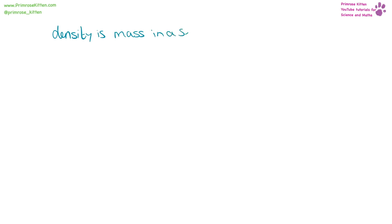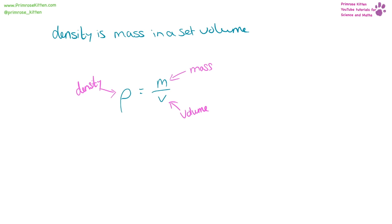Density is the amount of mass in a set volume. The equation for this is rho (ρ) — it looks like a lower case p but it's not, it's a lower case rho — equals mass over volume. The units: mass is measured in kilograms, volume is measured in meters cubed, and density is measured in kilograms per meters cubed.